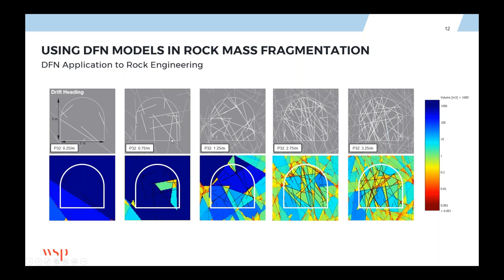We can visualize these models — these are kind of five-meter-squared drift projections onto the models. The blue background represents very large volumes — blocks of the order of 1000 cubic meters. As P32 increases moving to the right, the size of the blocks diminishes. We're moving from a highly massive rock mass to a much more blocky rock mass. This is really important in characterization for determining what is actually controlling the behavior.